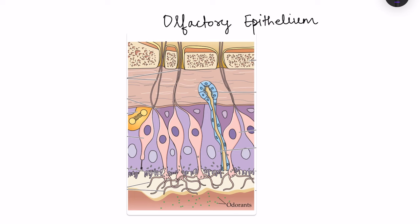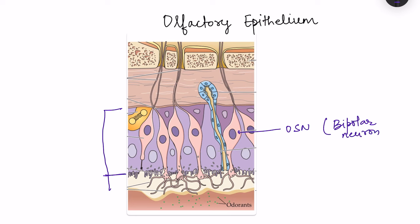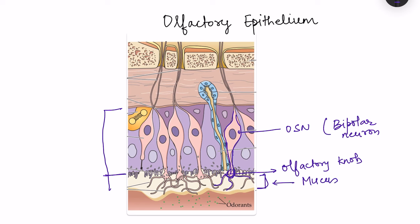In this diagram of the olfactory epithelium, the olfactory sensory neuron is basically a bipolar neuron. Its cell body is present in the olfactory epithelium, the dendrite projects below the epithelium and ends in an olfactory knob. From this olfactory knob, cilia project out into the mucus that lines the region below the olfactory epithelium.